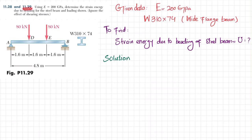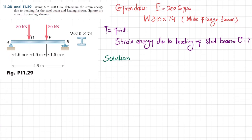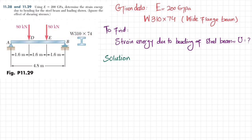Welcome back. Problem 11.29: using modulus of elasticity E equal to 200 gigapascals, determine the strain energy due to bending for a steel beam and the loading shown — ignore the effect of shearing stress. This is a simply supported beam AB, a wide flange beam W310 by 74, with point loads at D and E of 80 kilonewtons. From A to D the distance is 1.6 m, and D to E and E to B are equal — total beam length is 4.8 m. Find the strain energy due to bending.